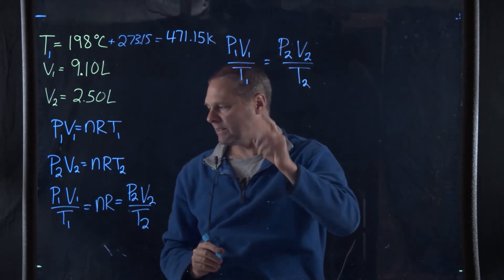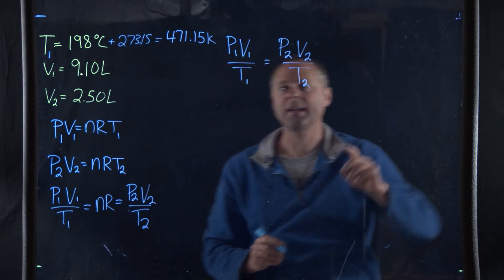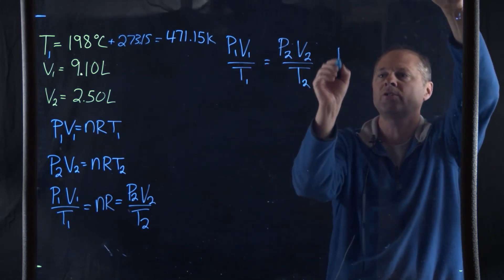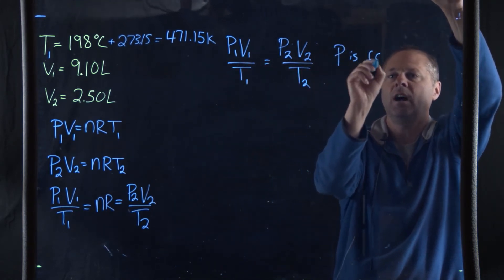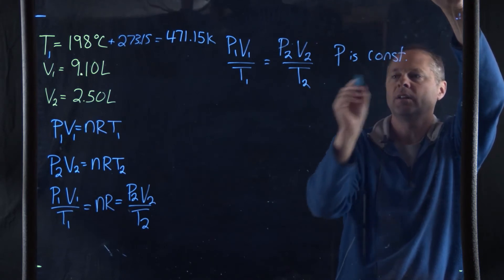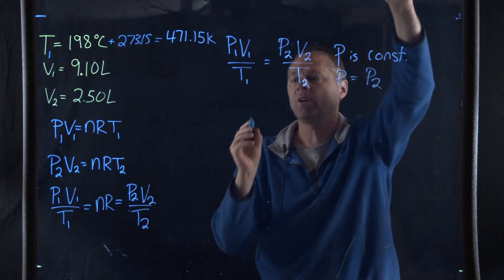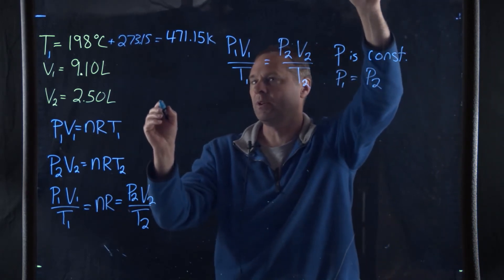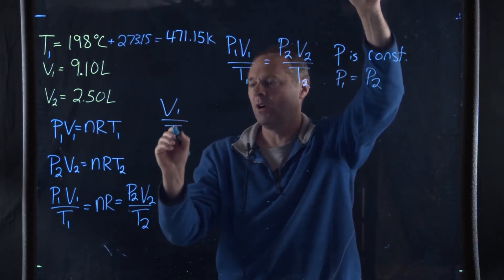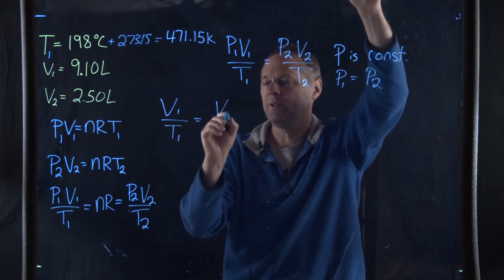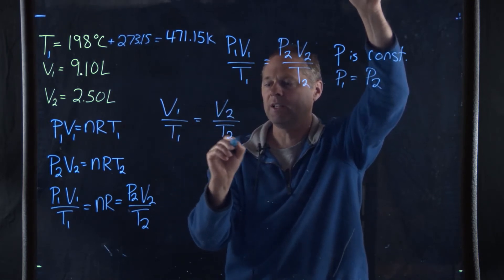It says in the problem that the pressure remains constant. So since the pressure is constant, then P1 is equal to P2. And so our equation gets a little bit simpler. It becomes V1 all over T1 is equal to V2 all over T2.